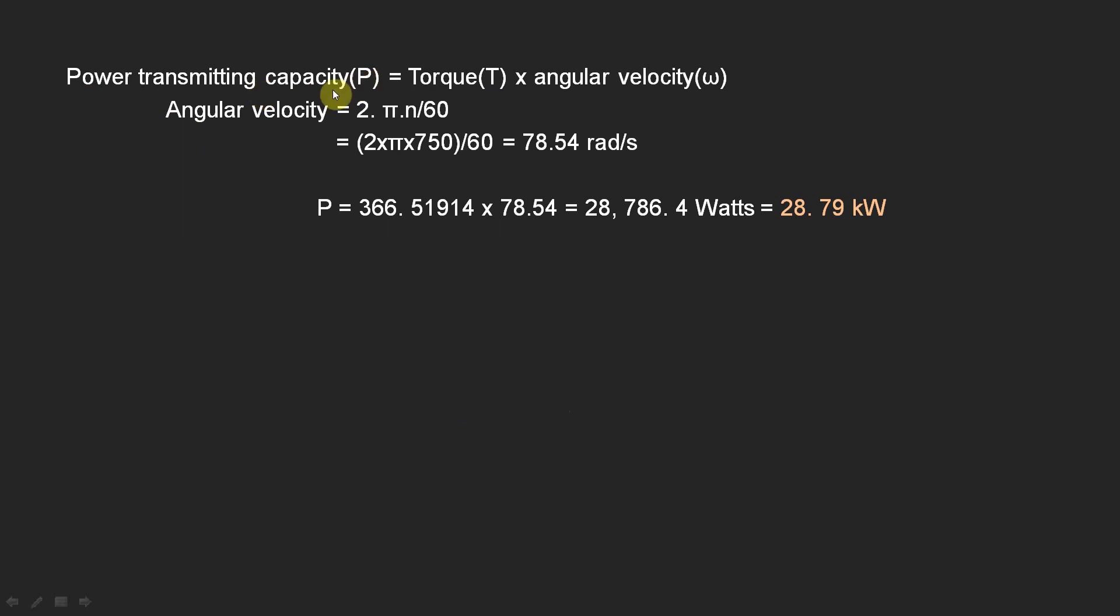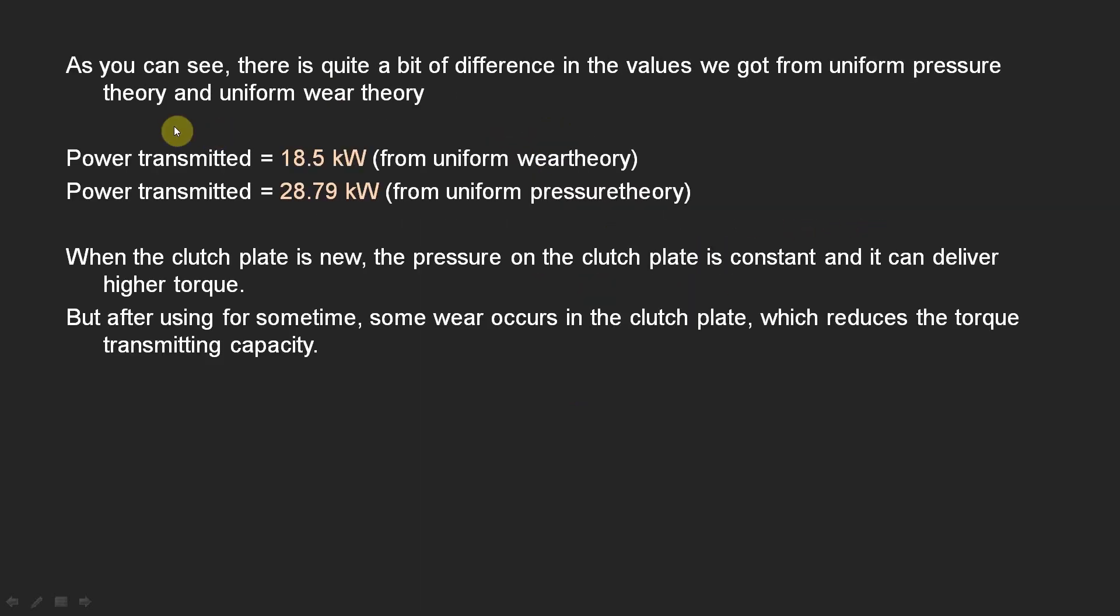And power transmitting capacity is torque × angular velocity. Torque we got here, and multiplying with angular velocity, we will get our value of 28.79 kilowatts. As you can see, there is quite a bit of difference in the values we got from both the theories.